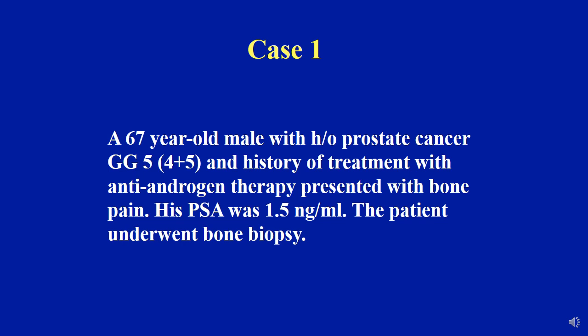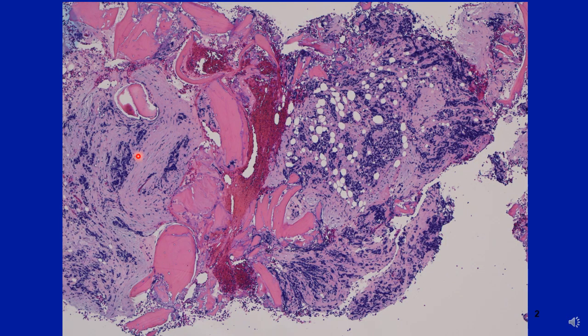I will start with a case: a 67-year-old male presented with bone pain. He had a history of prostate cancer grade group 5, that was Gleason score 4+5=9, and he had a history of treatment with anti-androgen therapy. His PSA was 1.5 nanogram per mL, so he underwent a bone biopsy, which is shown here.